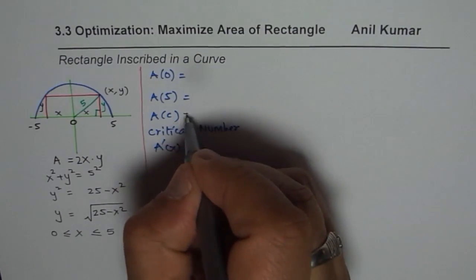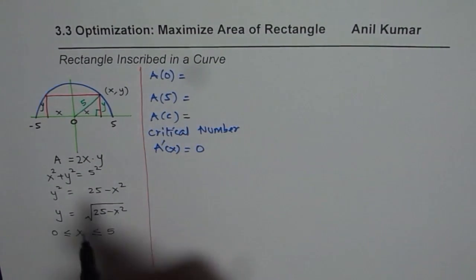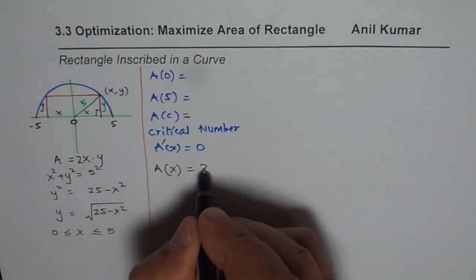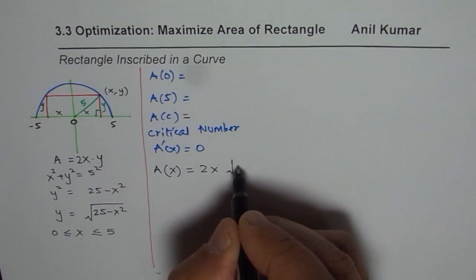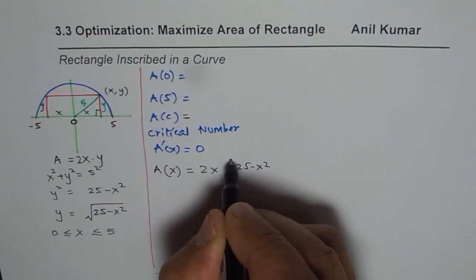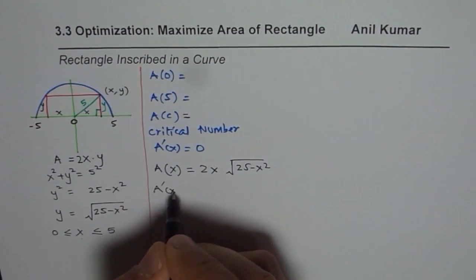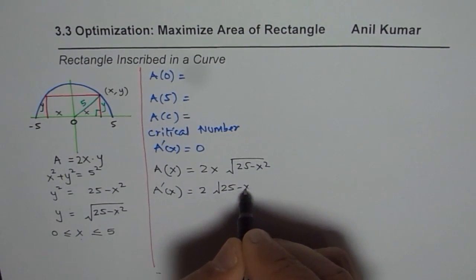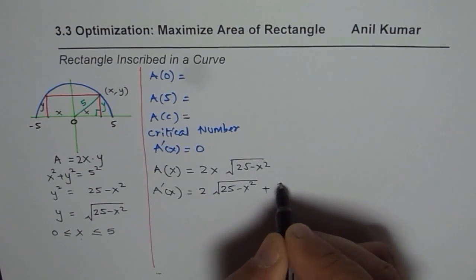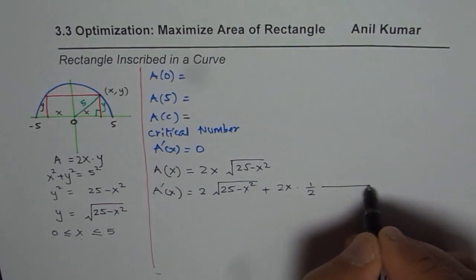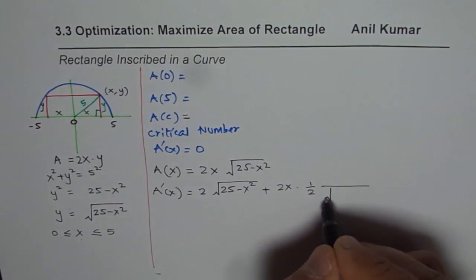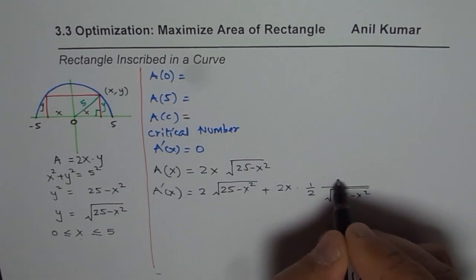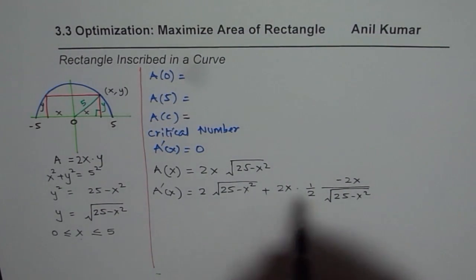We will know the maximum only when we compare the three values. The strategy is to write the equation of area in terms of one variable, x. Area = 2x · √(25 − x²). To find the critical number we apply the product rule. Derivative of the first term is 2 times √(25 − x²), plus the first term 2x times the derivative of the second term, which is (1/2)(25 − x²)^(−1/2) times the derivative of the inside term, which is −2x.